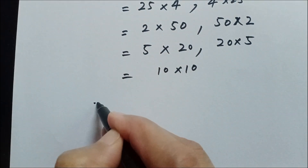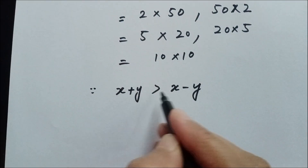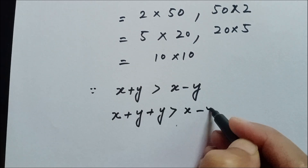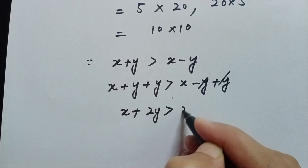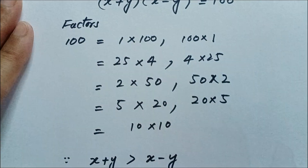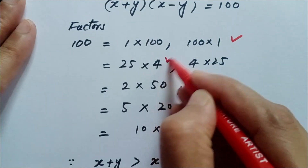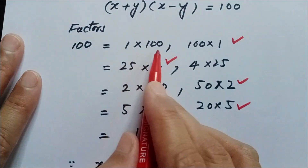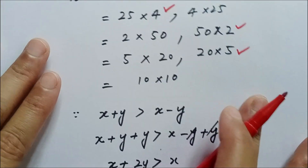x plus y is greater than x minus y. If we add y on both sides, x plus 2y is greater than x, which confirms the first factor is always greater than the second. Using this condition, we pick only those factor pairs where the first factor is greater than the second: 100×1, 25×4, 50×2, and 20×5. The pairs 1×100, 4×25, and 2×50 are rejected, and 10×10 are equal, so we reject those too.